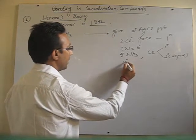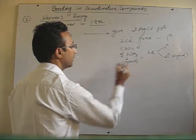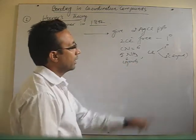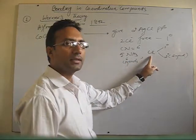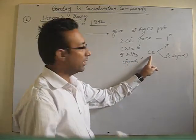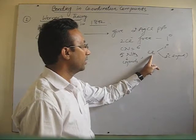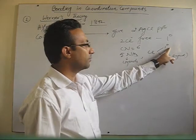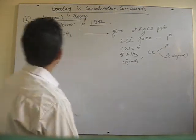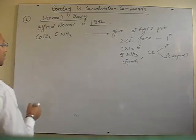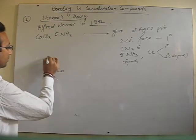In this case, we have 5 ammonia as ligands and 1 Cl as a ligand. But at the same time, Cl being negative, it is satisfying primary valencies also. So for this particular compound, let me draw the structure.